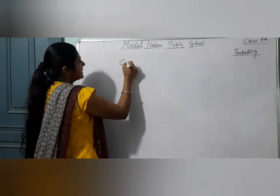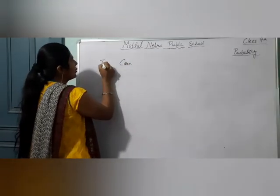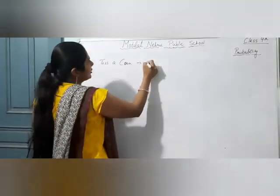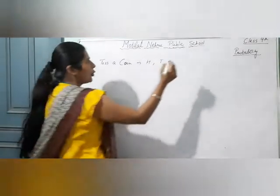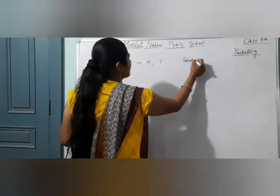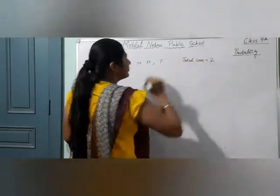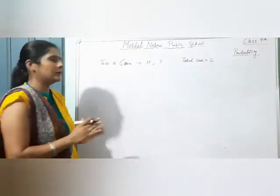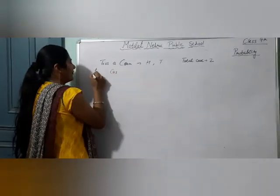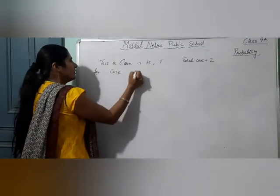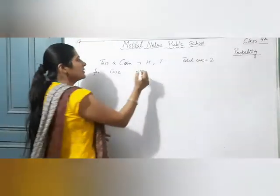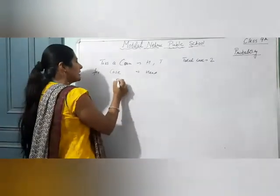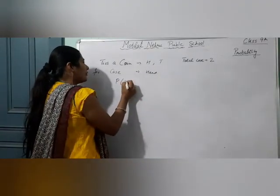सबसे पहले मैं coin का case ले रही हूँ. If I toss a coin, तो मेरे पास कितनी possibilities हैं — क्या-क्या आ सकते हैं? या तो head आएगा या tail आएगा. तो total cases कितने हैं मेरे पास? Two. अब मान लो head आने पे मैं जीतती हूँ, तो मुझे क्या चाहिए? Favorable case. Favorable case जो मुझे चाहिए — I want head.